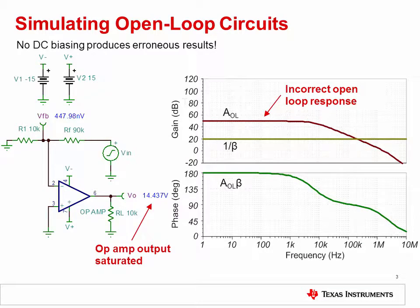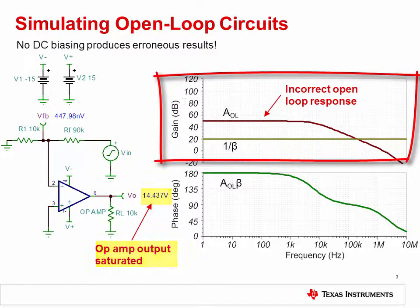However, simply breaking the feedback loop of a circuit will not produce correct simulation results. Without a proper DC bias, the output will saturate to one rail or the other, reducing the performance of the output stage. As shown here, the op-amp output is near the positive rail, resulting in erroneous AOL and loop gain curves.